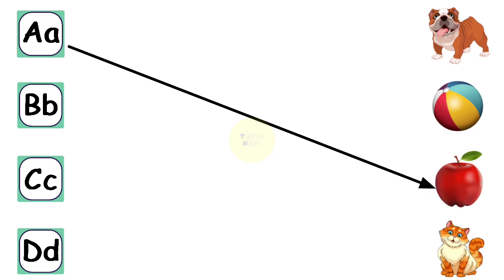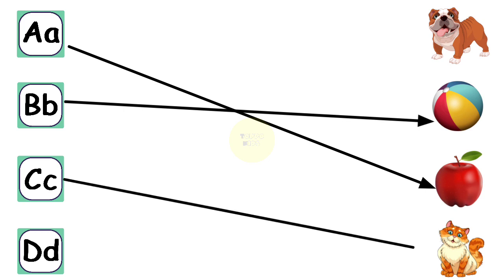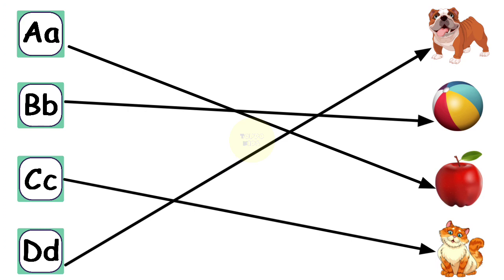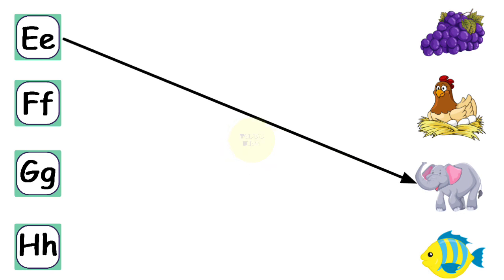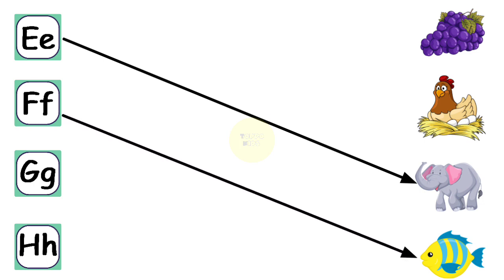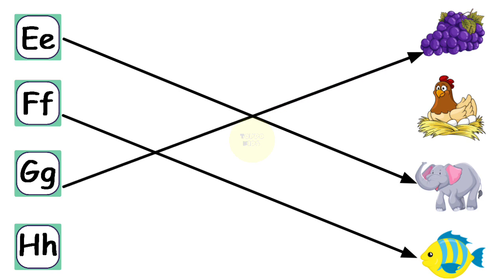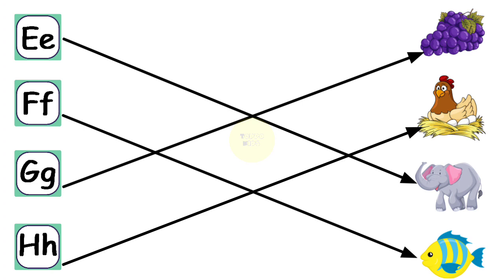A for Apple, B for Ball, C for Cat, D for Dog, E for Elephant, F for Fish, G for Grapes, H for Hand.